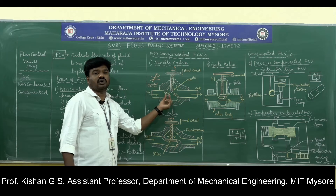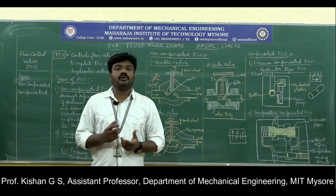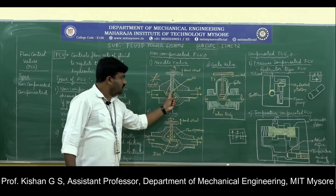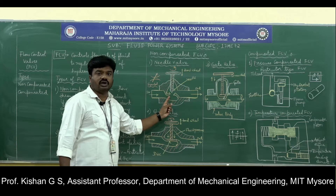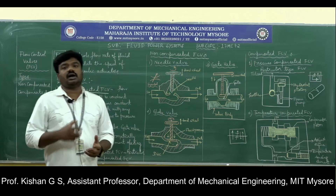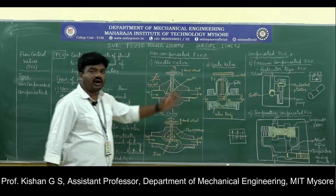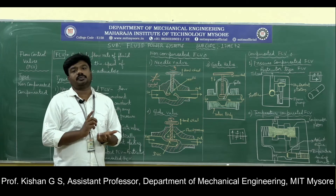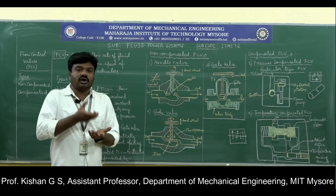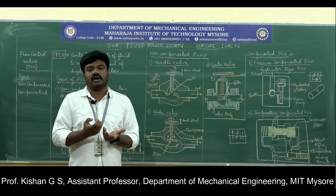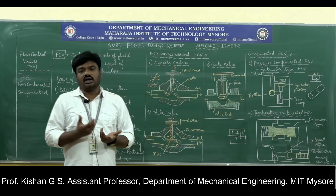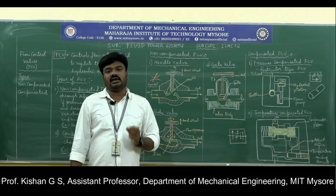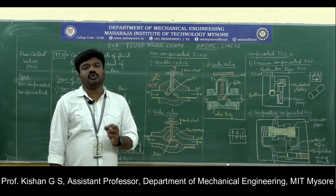We have two types of flow control valve: one is non-compensated and another is compensated. The term compensated relates to the parameters called pressure and temperature. Non-compensated flow control valves are those that do not compensate for variation in flow rate accountable due to pressure and temperature. Whenever the flow rate is affected due to pressure and temperature, valves that will not compensate that variation are called non-compensated flow control valves.